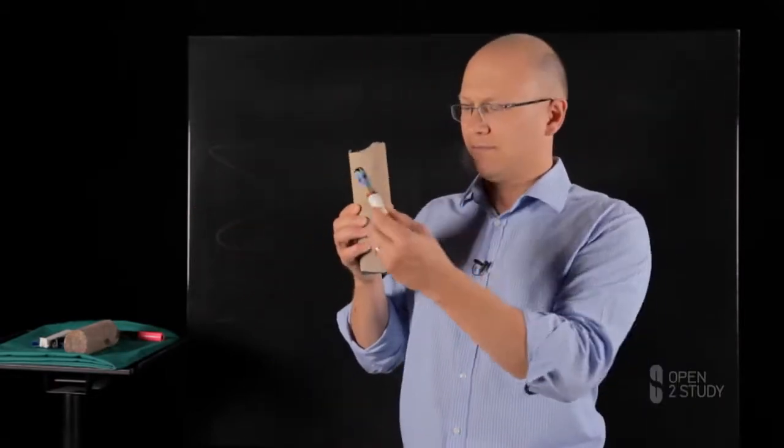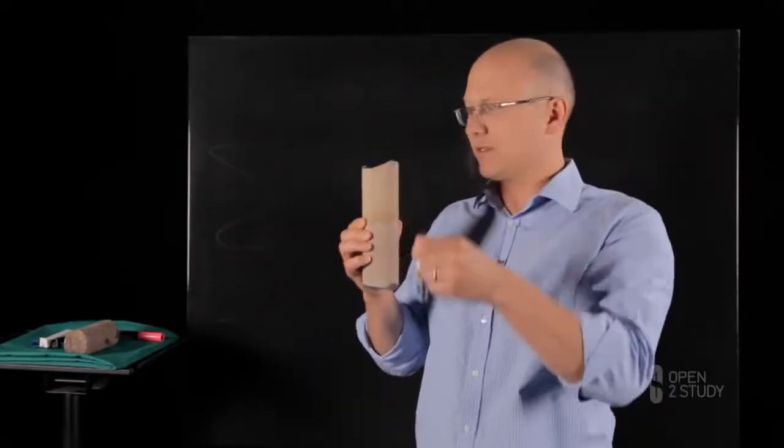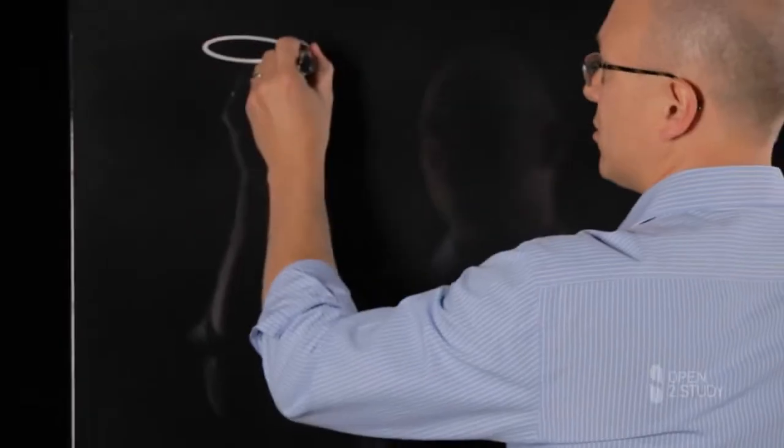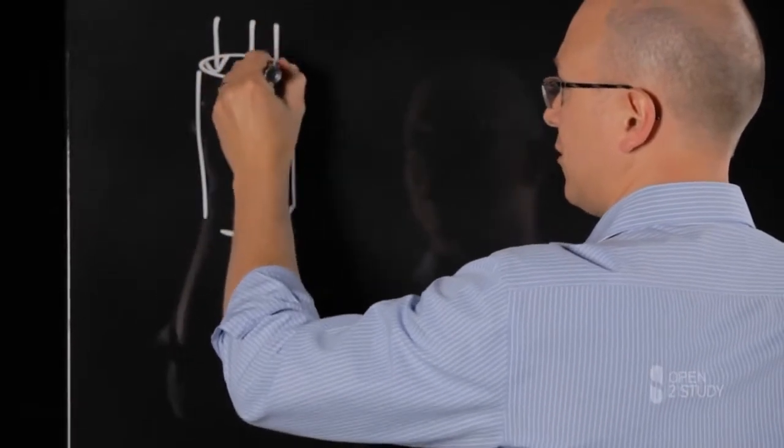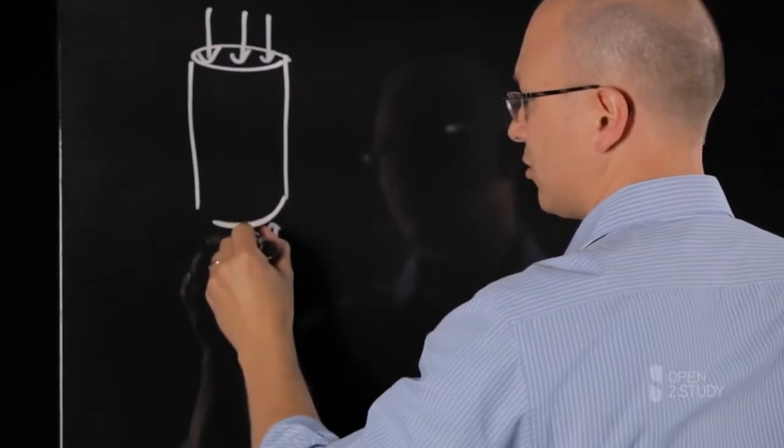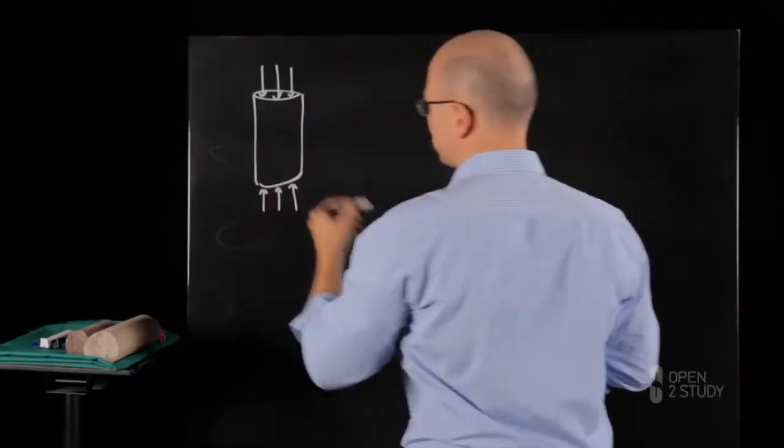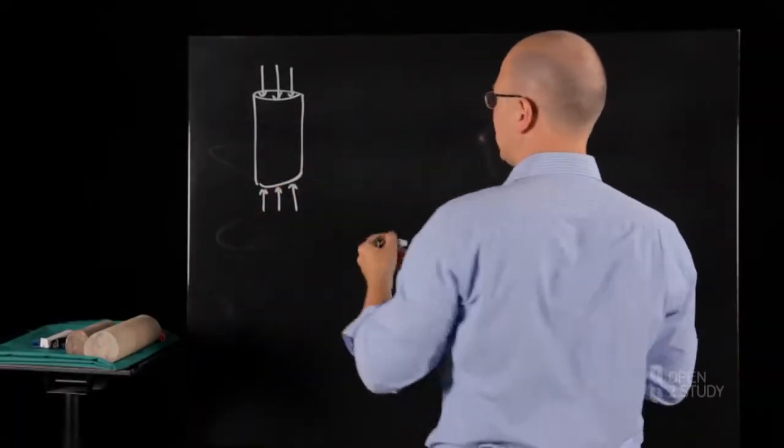If we consider a specimen such as this one with flat ends and we compress this specimen, that could be represented as this little sketch here. So we have the specimen subjected to compression and as the specimen is stressed it deforms.